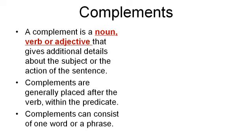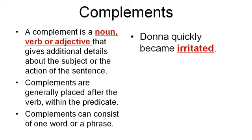Let's look at an example to put all of this together: Donna quickly became irritated. Donna is the subject. Quickly is the adverb. Became is the linking verb in this sentence. So what is irritated? Irritated is an adjective — it gives more detail about Donna's state of being. How is Donna? She's irritated. Notice that irritated is the adjective which is the complement that comes after the verb became.